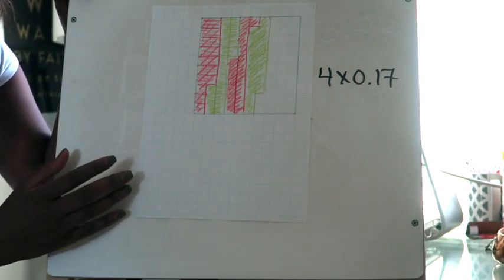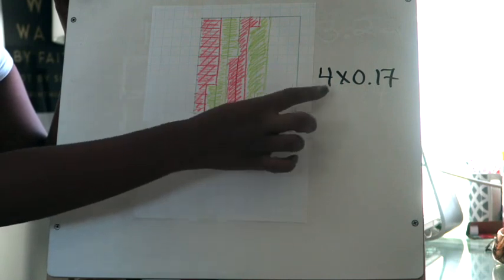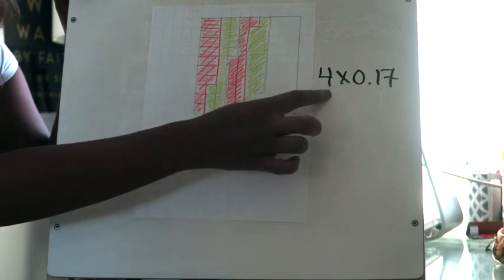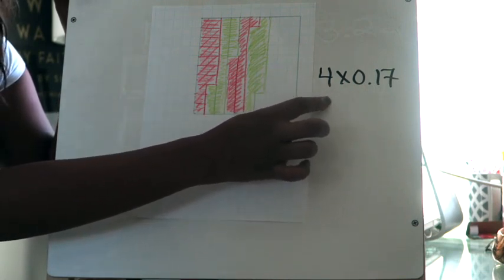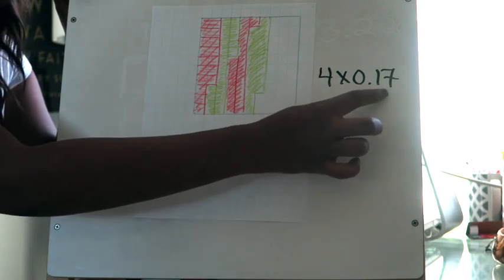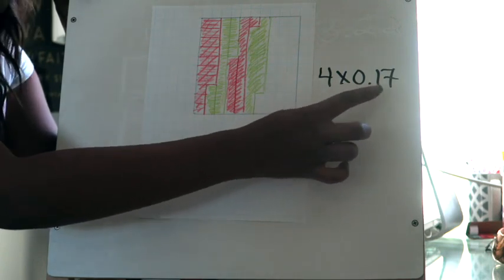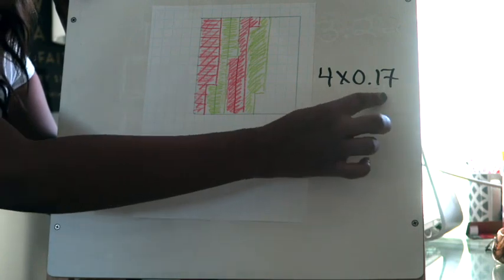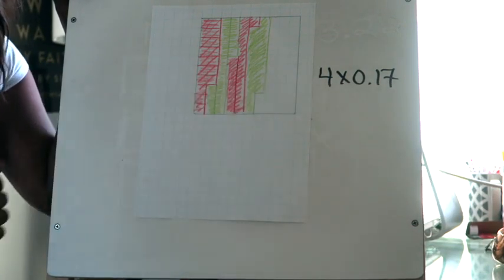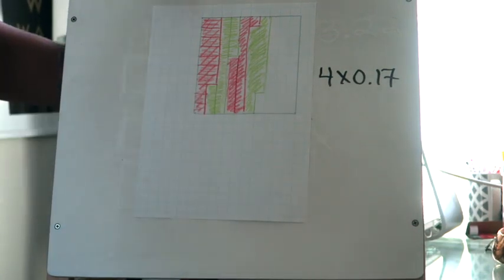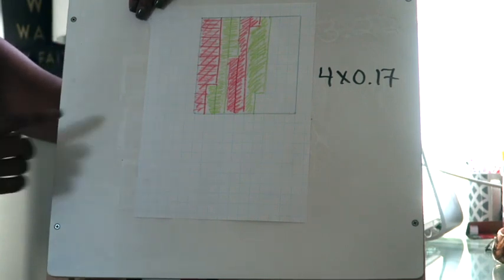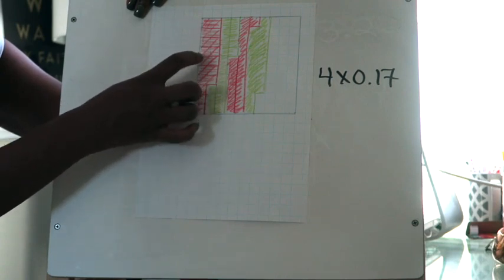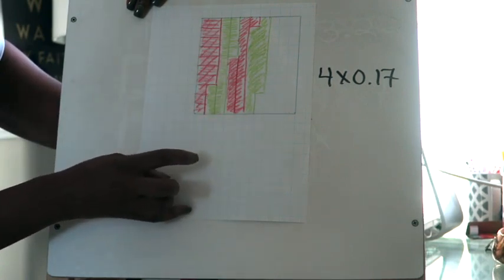Once you've colored in the correct number of boxes, the whole number tells you how many times to create those groups, and the decimal tells you the value of those groups. So I need four groups of 17 hundredths. Once you've colored it in, you're going to interpret it to find the product. It would not be efficient to count each box one at a time.